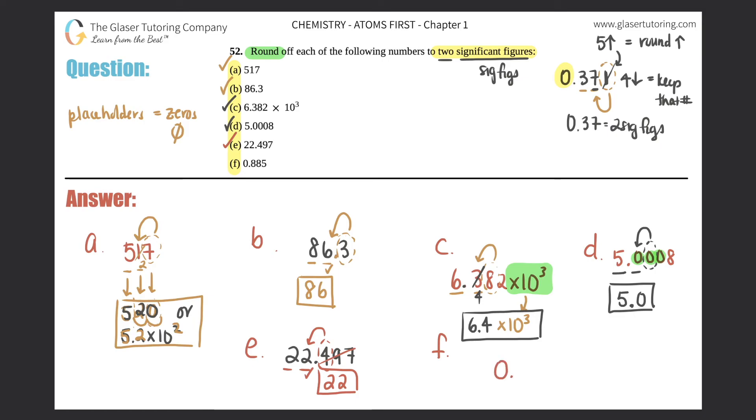And then last but not least, f, 0.885. This zero is a leading zero, and remember leading zeros never count, so we don't care about that. That's not going to be a sig fig, so we start here. This is my first sig fig and that's my second. And now I look at the five, and it's five or above, it falls into that category. So this eight would round up to a nine. So you can say 0.89, or if you wanted you could just say .89. I mean, that's the same exact thing. I just have a habit of putting the zero in the front, but you don't have to.